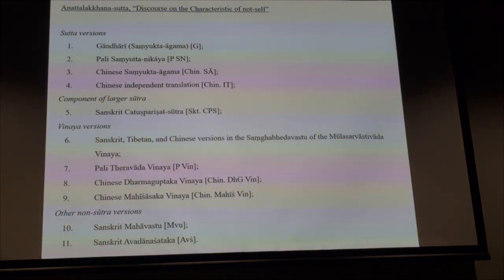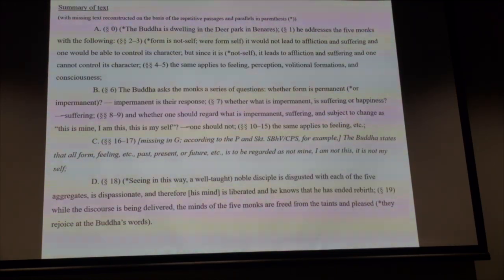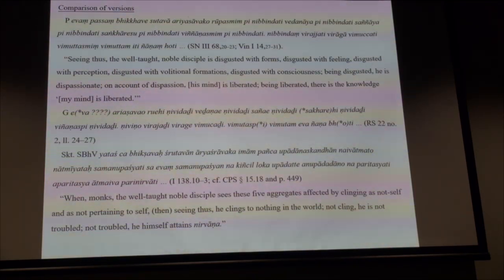The Anattalakkhana Sutta — the second discourse of the Buddha, after the Dhammacakkappavattana Sutta — is preserved in many different languages and forms. The Gandhari version I am currently editing has the same common structure as all versions: very similar, with the Buddha emphasising that nothing in this being is permanent, that what is suffering should not be regarded as oneself. The Pali text is identical with the surviving Gandhari version — these are the words of the Buddha. The Sanskrit version, however, is slightly different in wording but doctrinally the same gist: everything is impermanent, don't cling, regard it all as not-self.